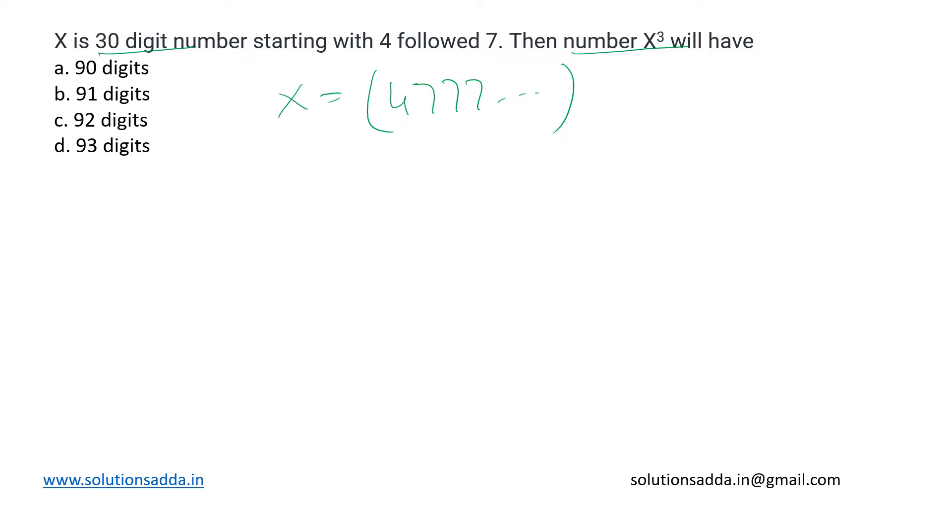This number X can be written as 4.777... × 10 to the power 29. It originally had 30 digits, and out of that I have left just one before the decimal point, so 29 will go in the power. This is how you can write X in the precision format.